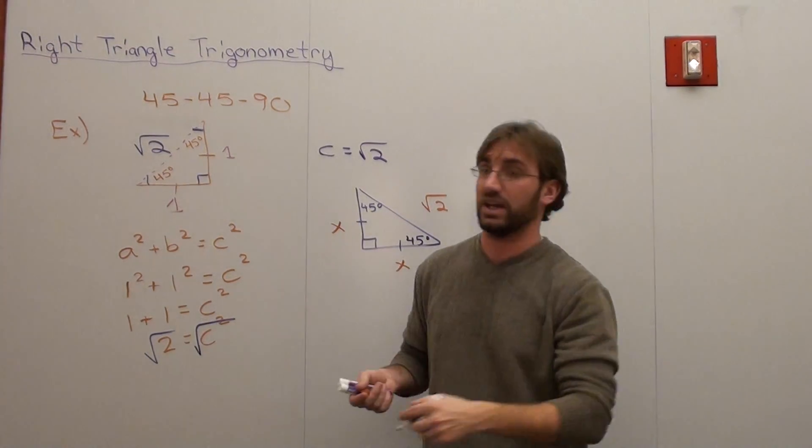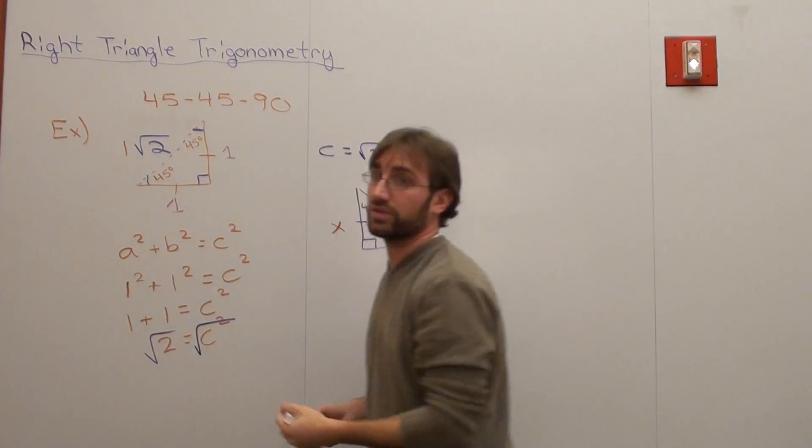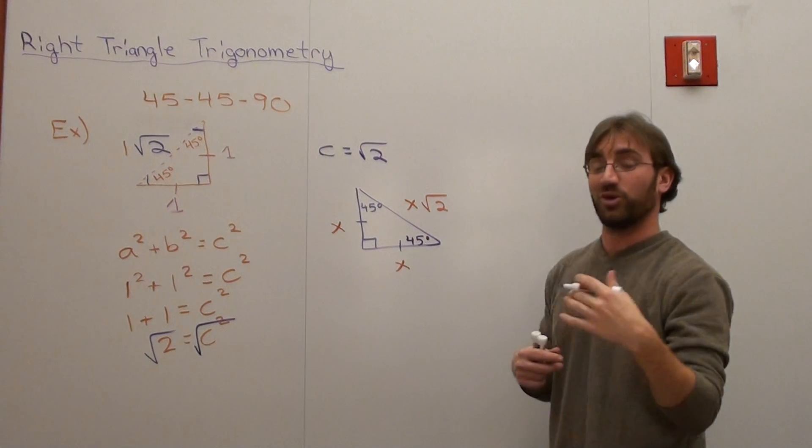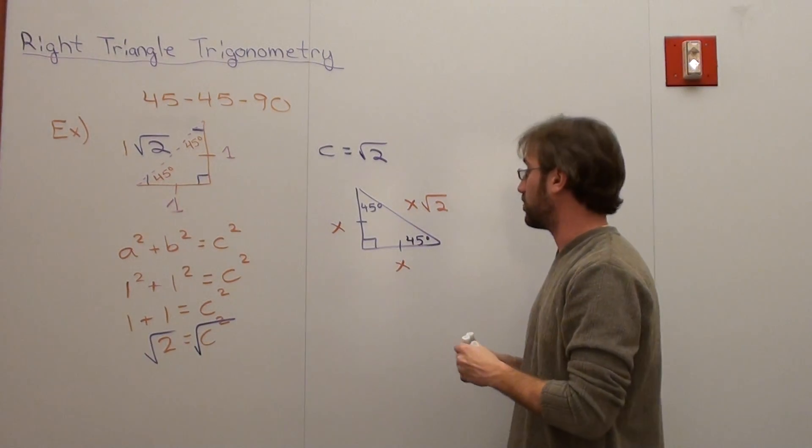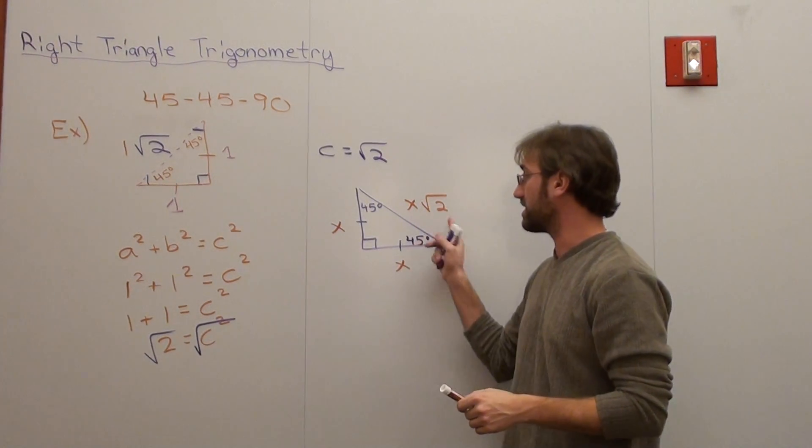Now somebody's going to say, well, there's no 1 here. Yeah, there is actually. It's 1 times the square root 2, so it's actually x root 2. So when we're trying to figure out a 45-45-90 triangle, we're going to use this information right here. Pretty cool.